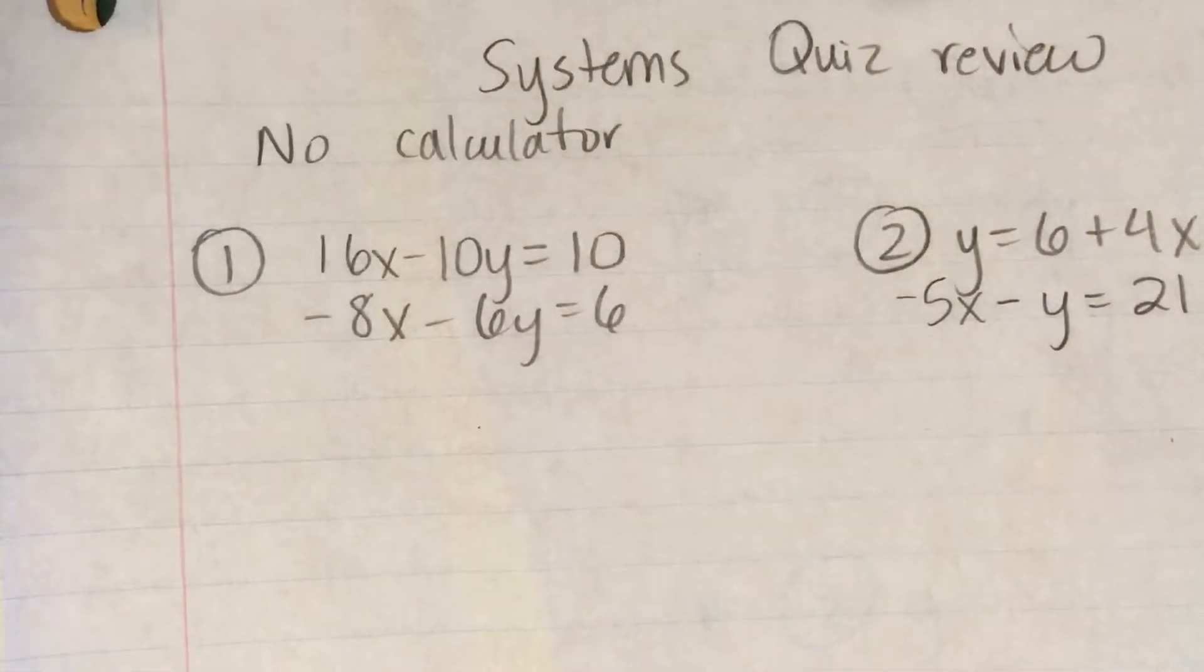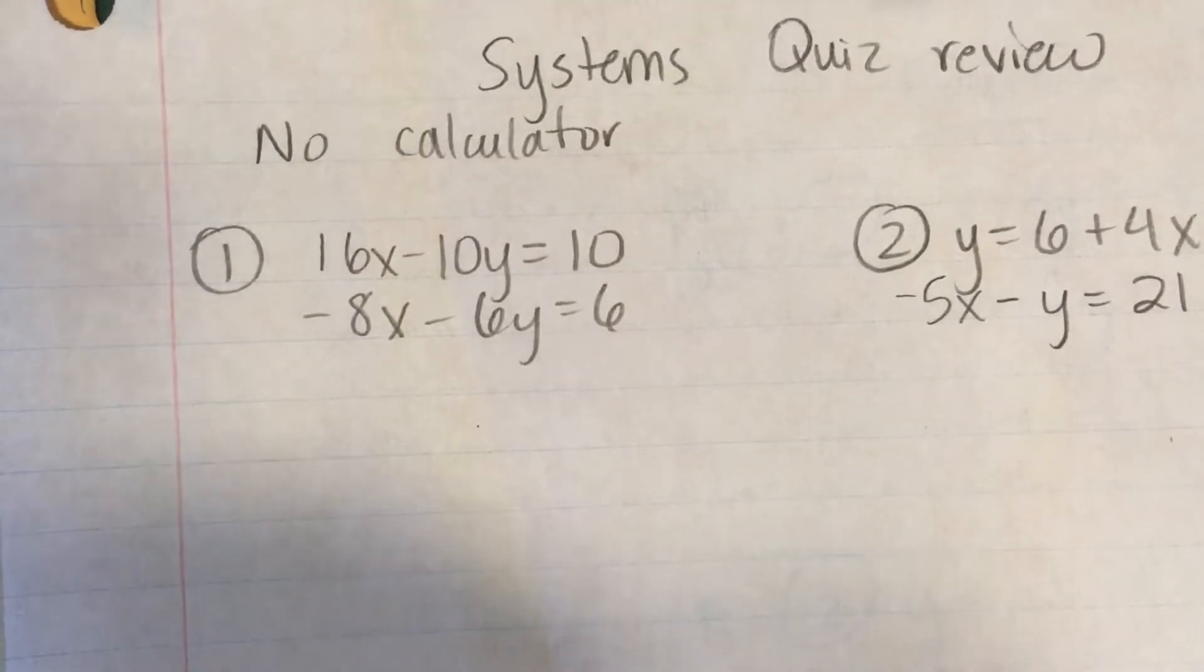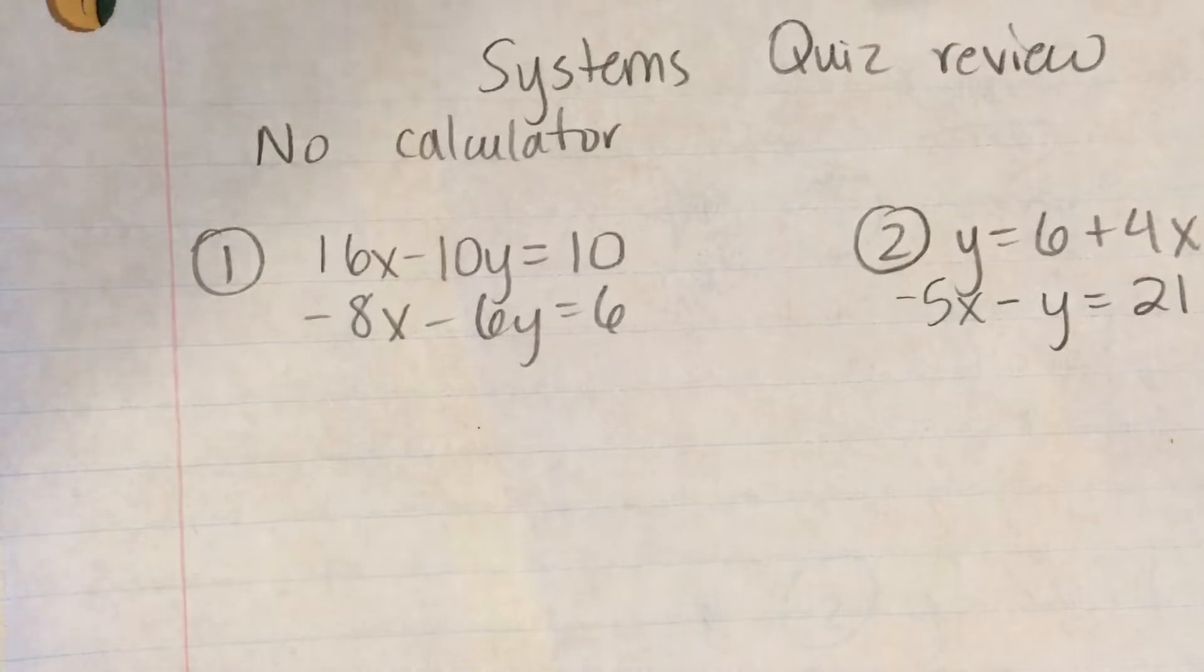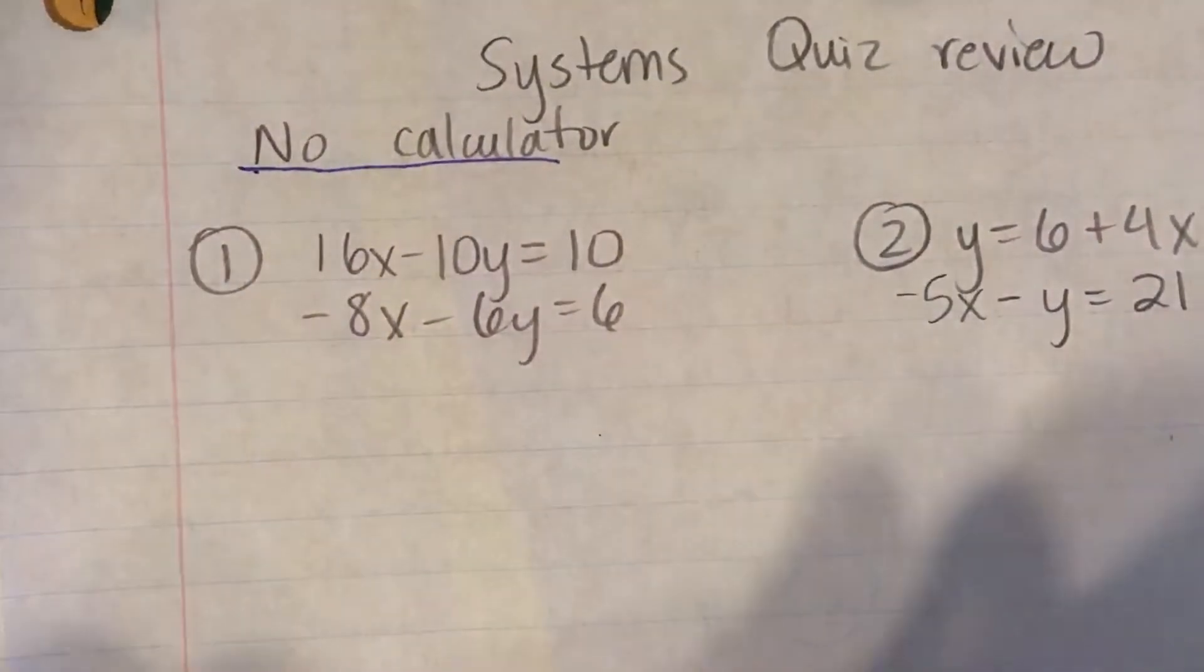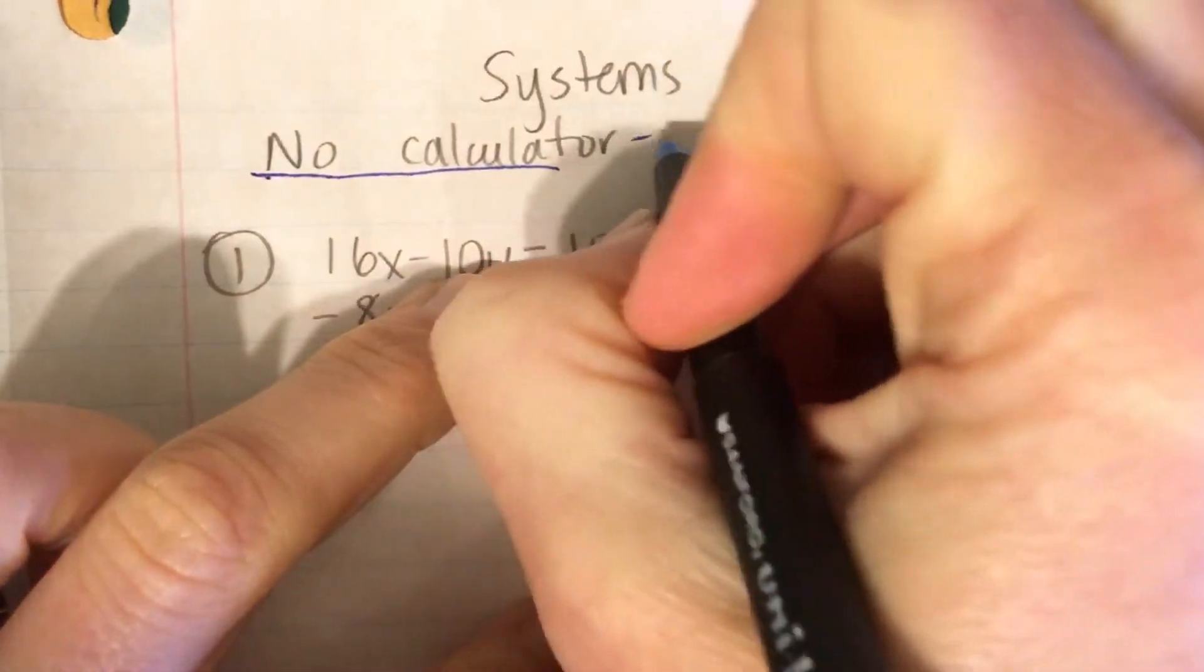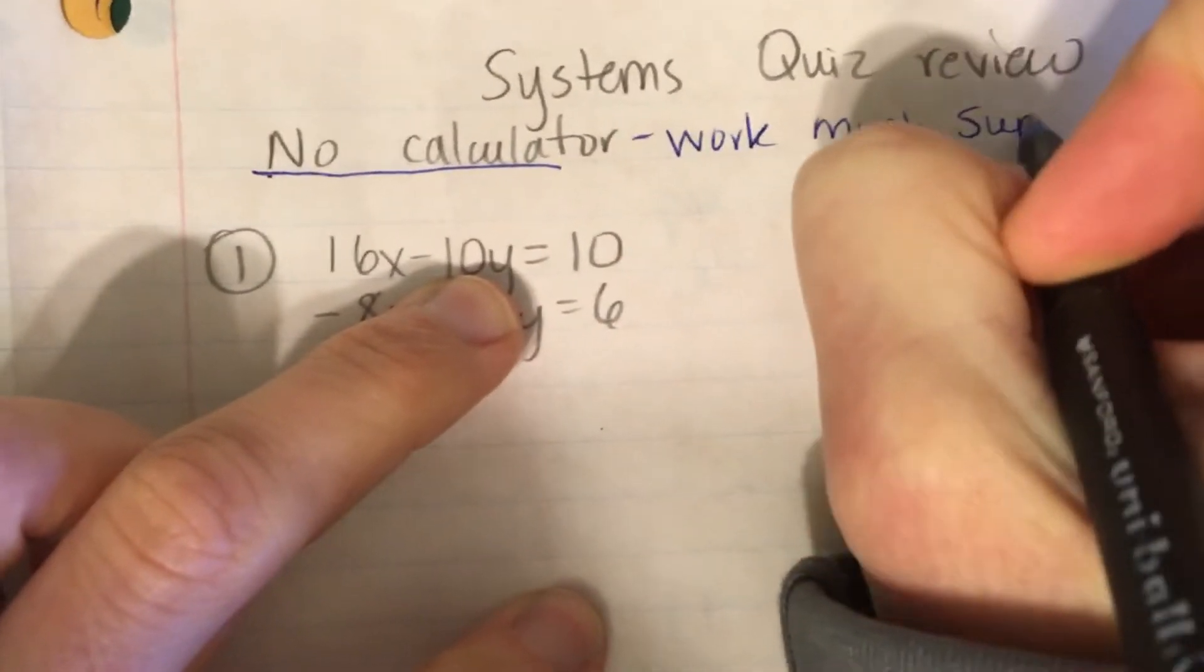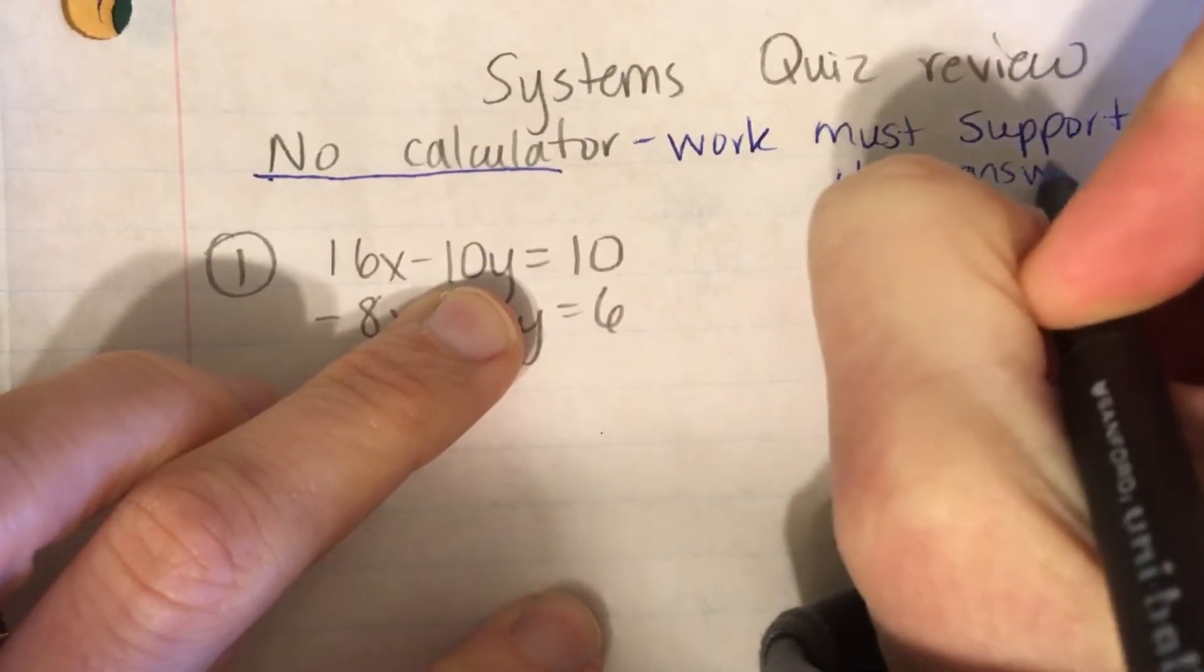Okay, this is the quiz review for the quiz. The quiz will have five questions on it and will be set up exactly like this quiz review is. For the no calculator questions, your work must support your answer or you get no credit.